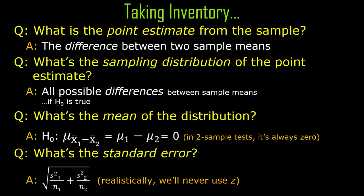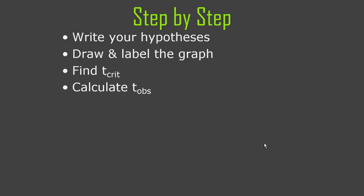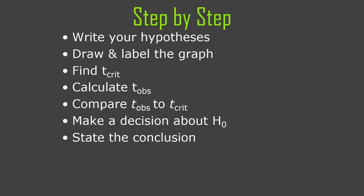Realistically, we'll never use z — this is going to always be the t standard error. There's a different standard error for independent samples tests than there is for paired samples tests. So step by step, it's the same as before: write out your hypotheses, draw and label a graph, find a t-critical, calculate the observed, compare those two, make a decision — reject the null or not — and then state your conclusion. Same process as before.